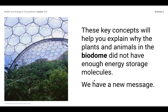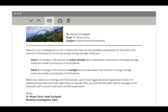These concepts are going to help you explain why the plants and animals in the biodome did not have enough energy storage molecules — that's our Chapter 1 question. At the end of this lesson, you'll need to write an explanation to answer that question. We've got a new message from Dr. Corey. He says: based on your investigation so far, there are two possible explanations. Claim number one: a change in the amount of carbon dioxide led to a decrease in ESMs made by producers in the biodome. Claim number two: a change in the amount of sunlight led to a decrease in ESMs made by producers in the biodome. Before you share your findings with the Econauts, you'll need to decide which explanation is best — you can only argue one claim. Dr. Corey is sending along some data that might help you decide; after you examine it, send a message to the Econauts with a visual model and a written explanation.